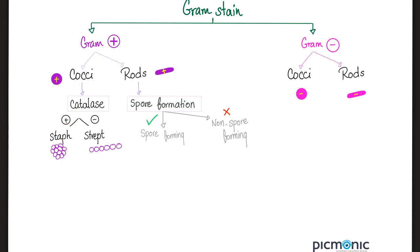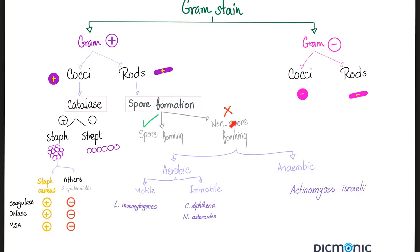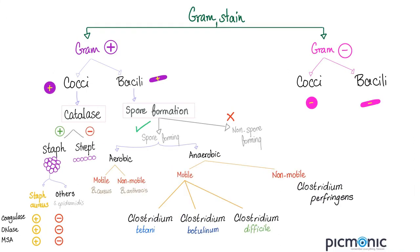Catalase positive includes the staph; catalase negative includes the strep. The rods are divided not based on catalase, but based on spore formation — spore forming or non-spore forming. In the previous video I talked about non-spore forming such as Listeria, Corynebacterium diphtheriae, Nocardia, and Actinomyces israelii. Today we'll talk about the spore-forming bacteria.